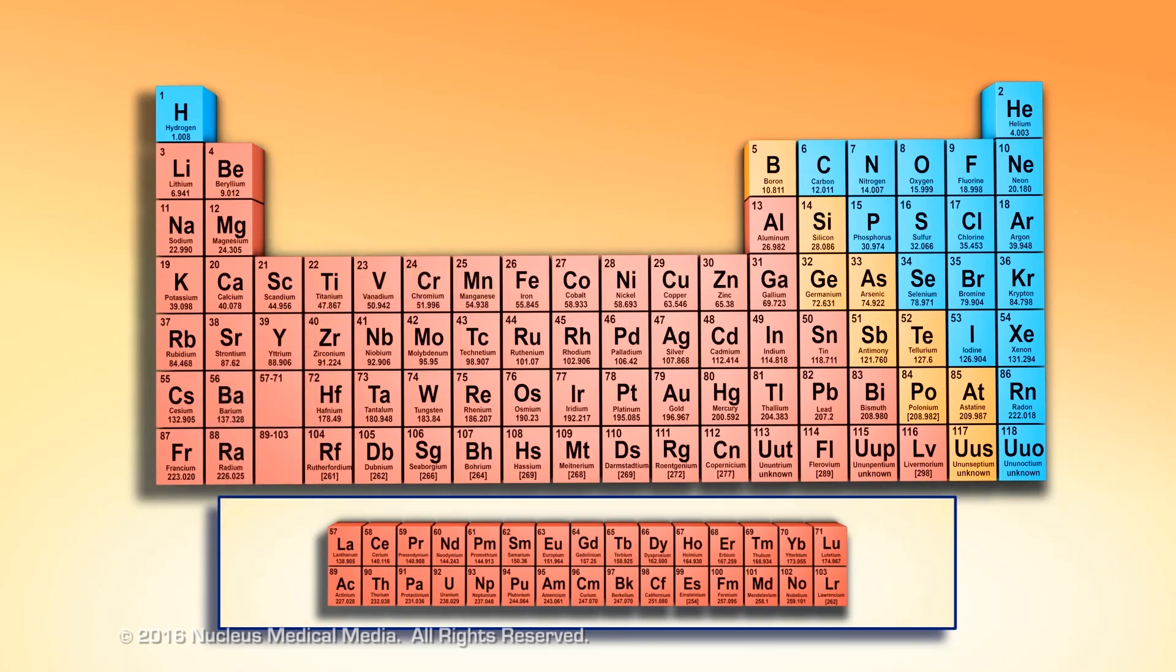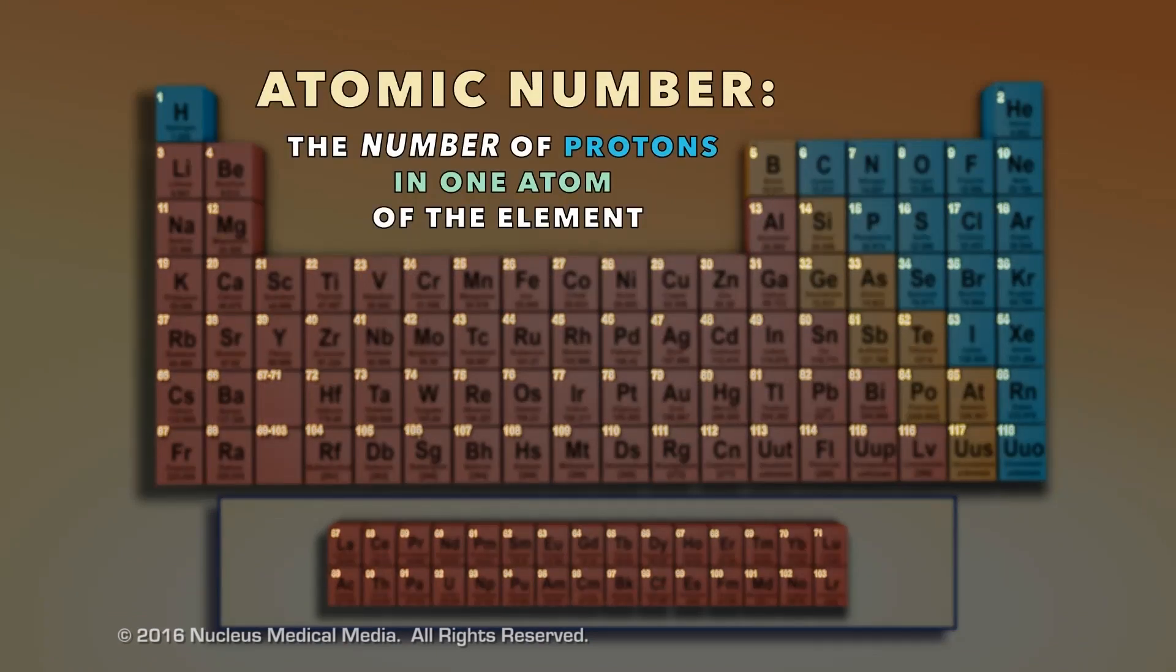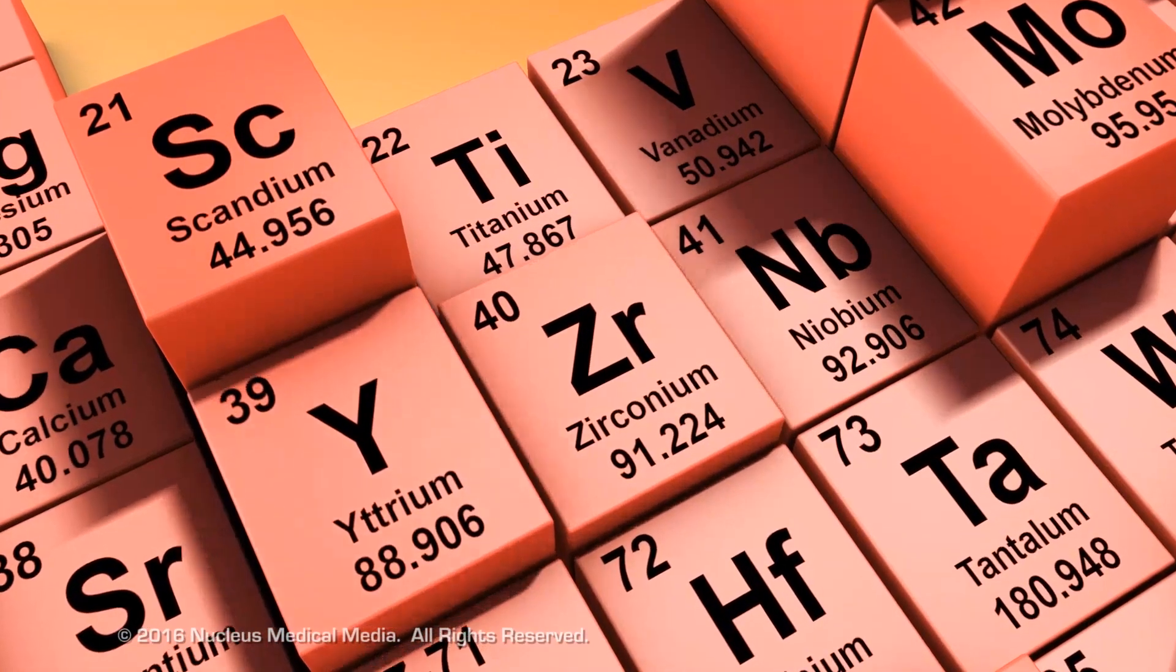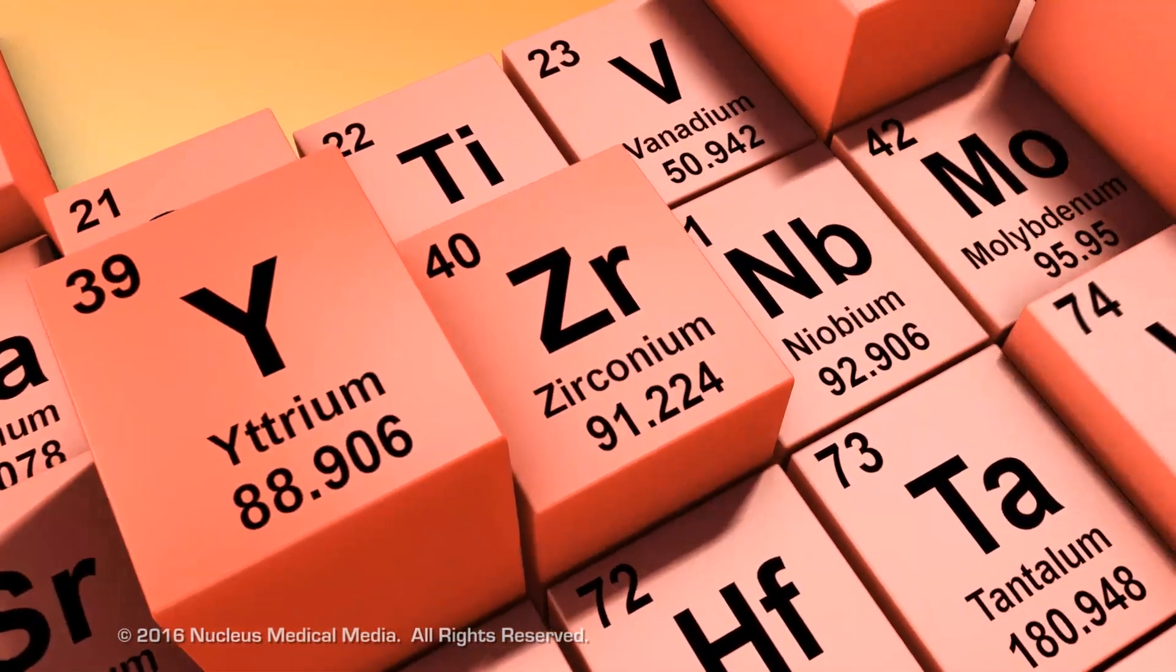The elements are organized left to right and top to bottom by their atomic number, meaning the number of protons in one atom of the element. Each box shows an element represented by its unique symbol.